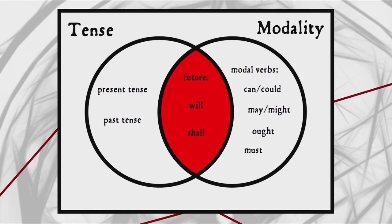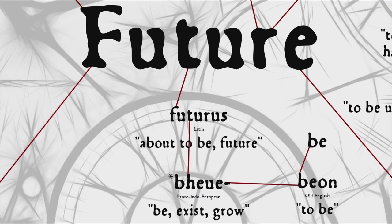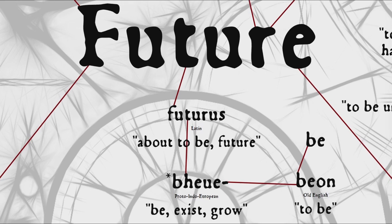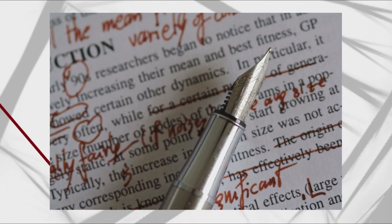One way of thinking about the future then is as occupying the intersection of tense and modality. The word future itself comes from the Latin futurus, the future participle of the verb 'to be,' which comes from the Proto-Indo-European root meaning be, exist, or grow — which also gives us the English verb 'to be.' This makes sense since these English will and shall forms were called future tenses by grammarians who were trying to fit English grammar into the model of Latin verb forms, even though they don't really work the same way.